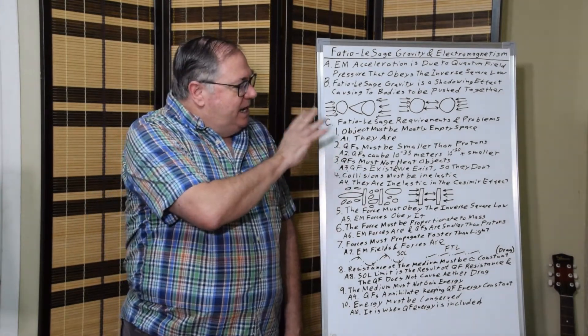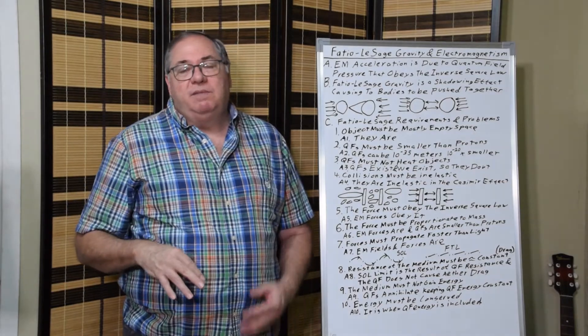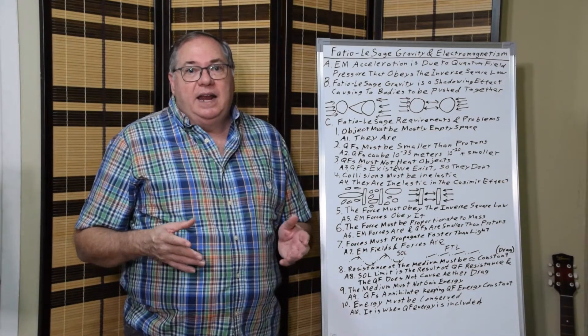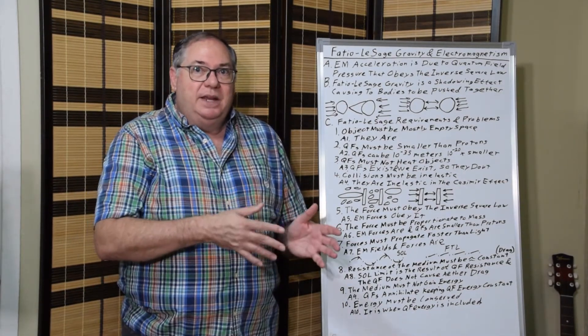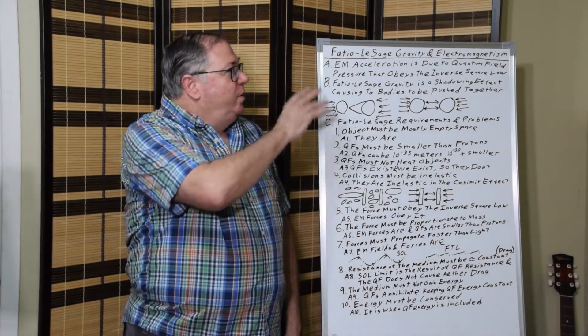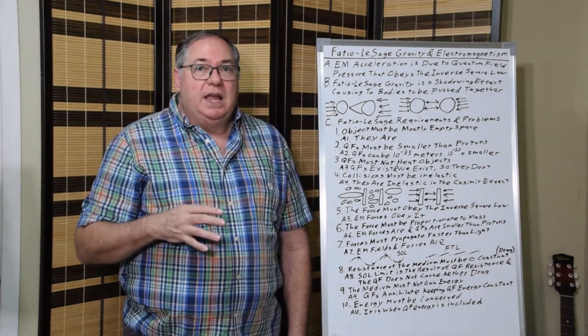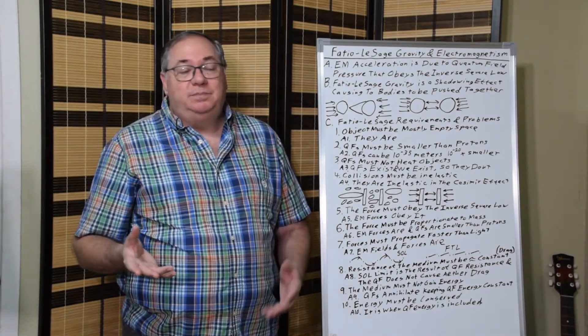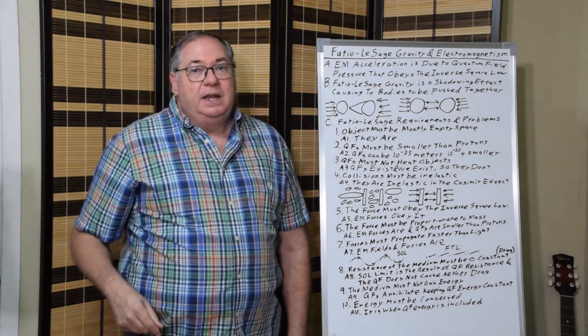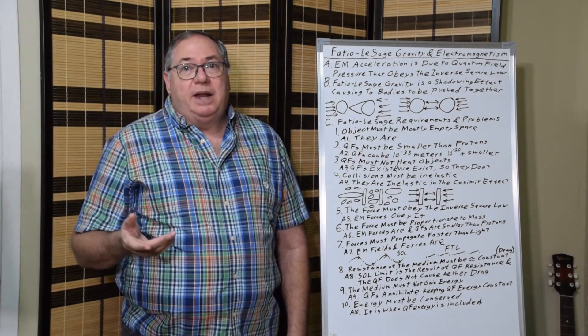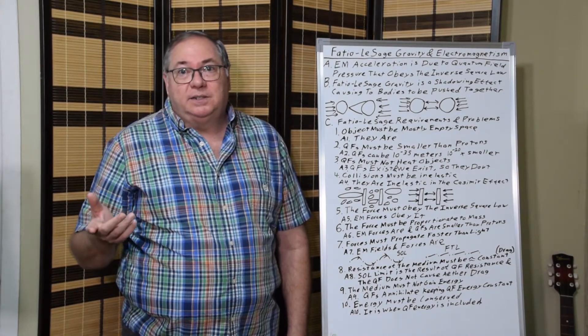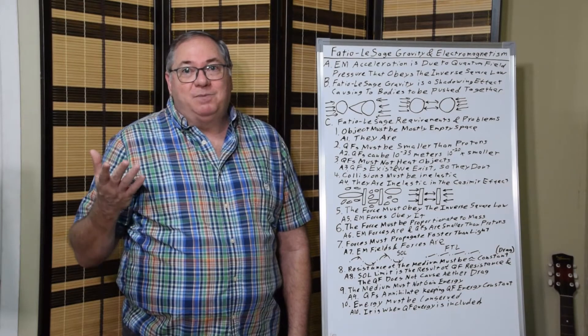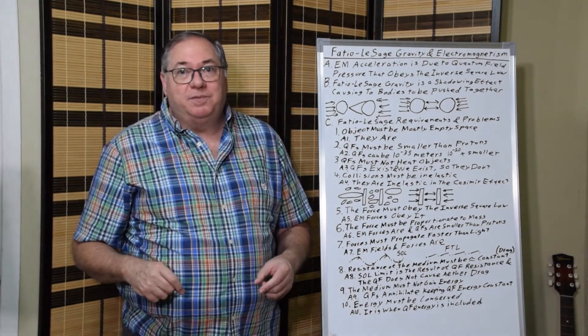Anyway, these are the ten major problems with the Fatio-Lesage theory. And as I've shown, if the medium is quantum fluctuations and the force is the same force that causes acceleration of electromagnetism, then there isn't a problem. Then gravity simply emerges as an electromagnetic Fatio-Lesage effect. And that's where the Newtonian part of gravity comes from.